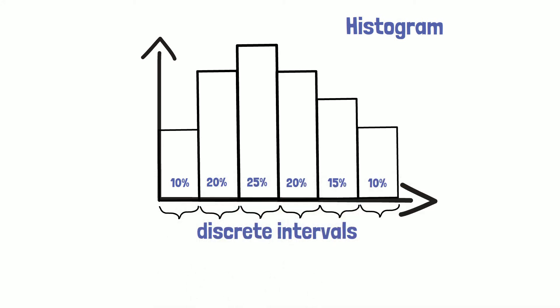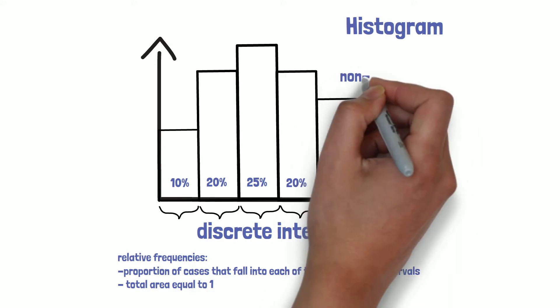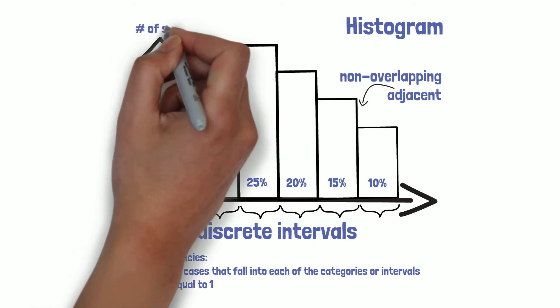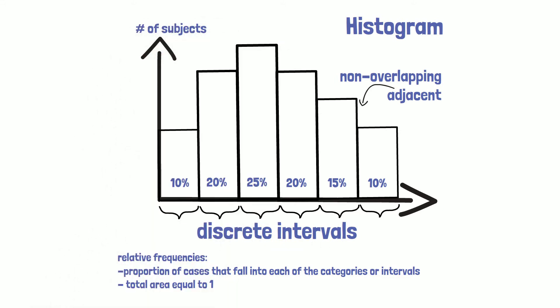A histogram may also be normalized displaying relative frequencies. It then shows the proportion of cases that fall into each of the categories or intervals with a total area equal to 1. The categories are usually specified as consecutive, non-overlapping intervals of a variable. They must be adjacent and are usually chosen to be of the same size, for example, the number of subjects in predefined age classes.